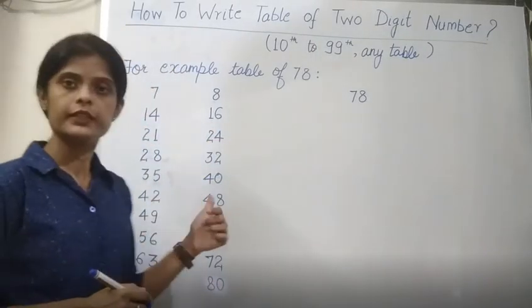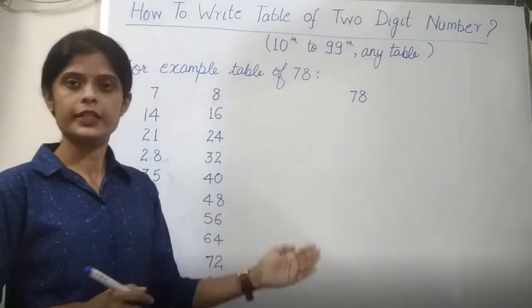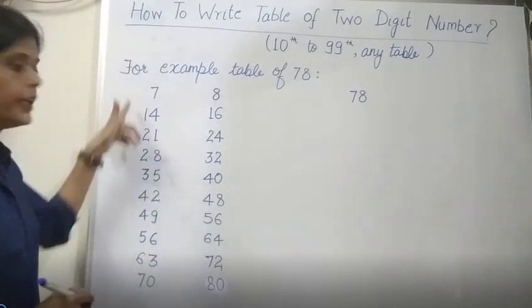So first of all, let us start with the example of table of 78. 78 table, first of all, let us know 7 and 8 table. So first of all, let us write 7 table.